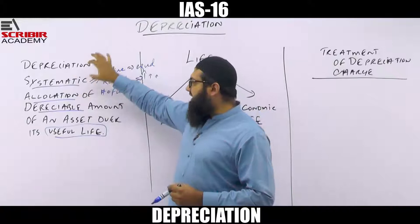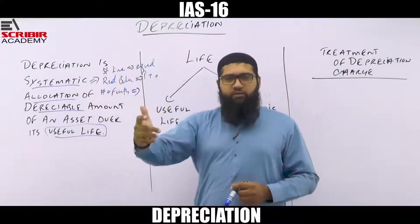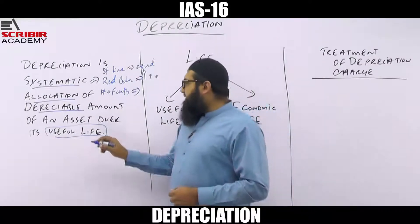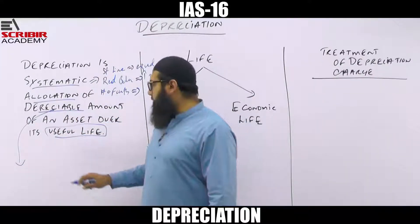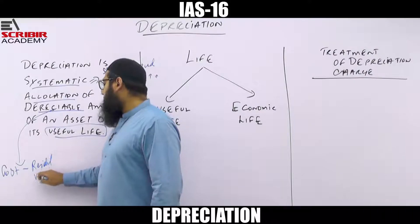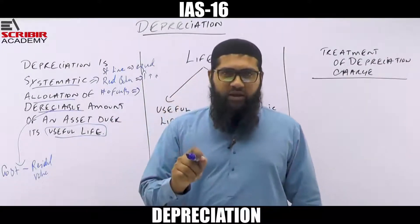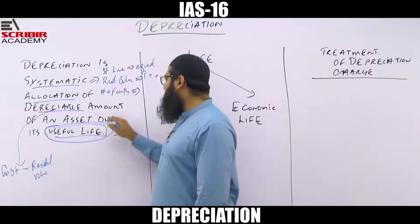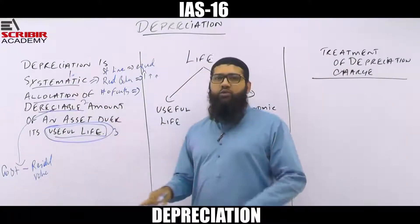So the first aspect of depreciation is that it's a systematic allocation — straight line, reducing balance, number of units, sum of digits, and so on. The second aspect is the depreciable amount, which means cost less residual value. So depreciation is the systematic allocation of the depreciable amount of an asset over its useful life.